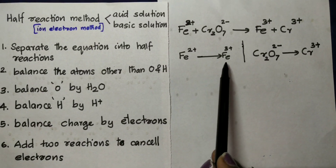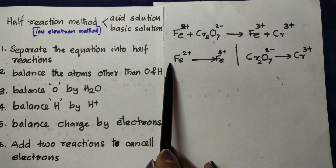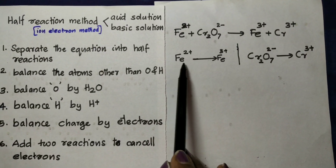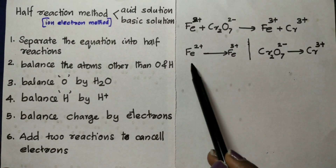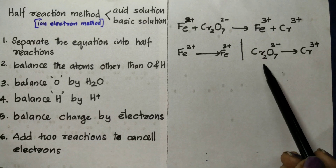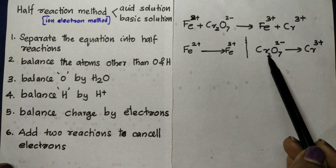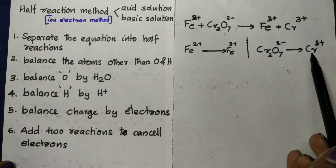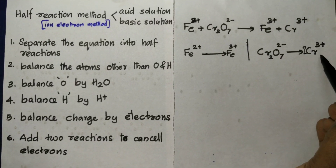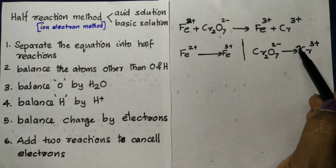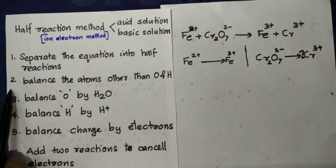Here there is one Cr on the left, and here there is Cr2O7 with 2Cr. There is one Cr on the right side. Now we need to balance this — we place a 2 in front of Cr3+ so both sides have 2Cr. Then we will finish this balancing step.